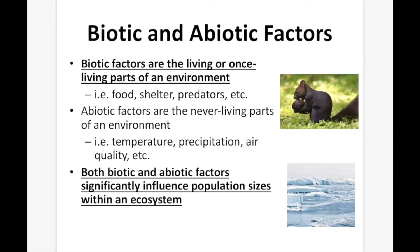Biotic and abiotic factors. Biotic factors are the living or once-living parts of an environment — for example, food, shelter, predators, etc. Abiotic factors are the never-living parts of an environment — for example, temperature, precipitation, air quality, etc. Both biotic and abiotic factors significantly influence population sizes within an ecosystem.